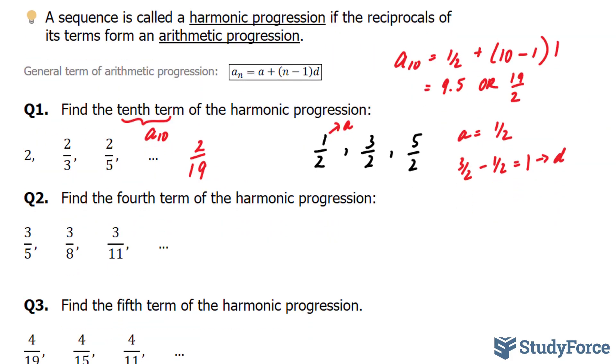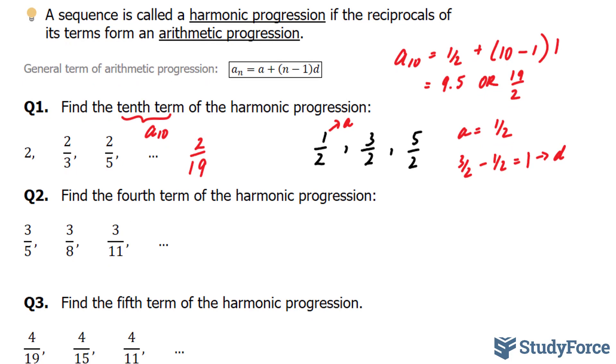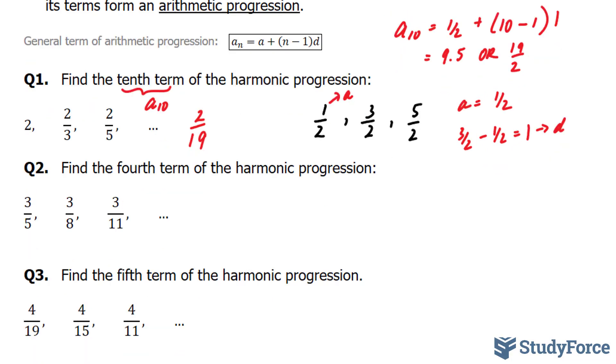Let's do question 2. Question 2 and 3 are practically the same, just different numbers. So we should know what to do from here. For question 2 they ask, find the fourth term of the harmonic progression. Start by taking the reciprocal of each of these terms. 5 over 3, 8 over 3, and 11 over 3.